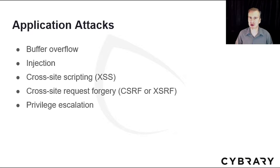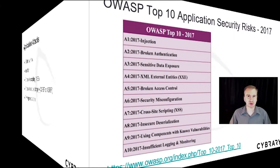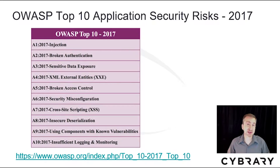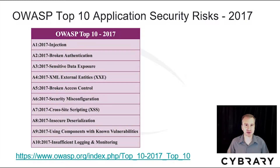Application vulnerabilities are a known threat vector. On your screen you see some of the common types of attacks that I'll be talking about over the next few minutes. OWASP is considered the authoritative source to understand the top 10 application security risks. See OWASP.org for more information. The list on your screen is very similar to the list also mentioned by Security Plus.